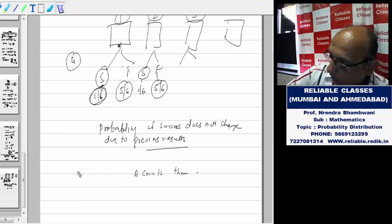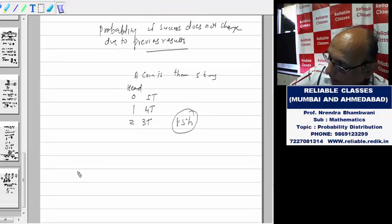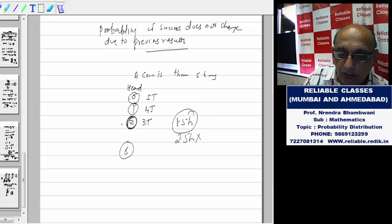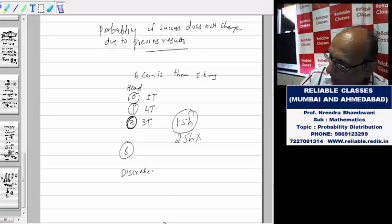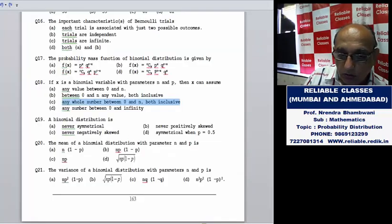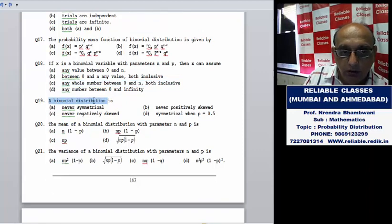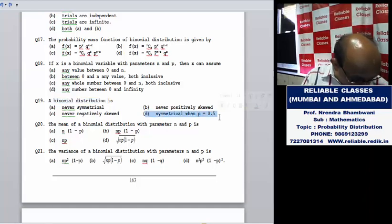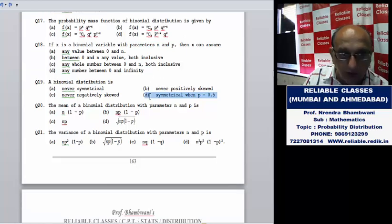A coin is thrown five times. Number of heads can be: zero heads (five tails), one head (four tails), two heads (three tails). But can there be 1.5 heads? No. 2.5 heads? No. So the value of heads is integral, whole numbers from zero to five. In between, 1.2, 1.3 won't come. That's why it's called discrete distribution. A binomial distribution is symmetrical when p equals 0.5.